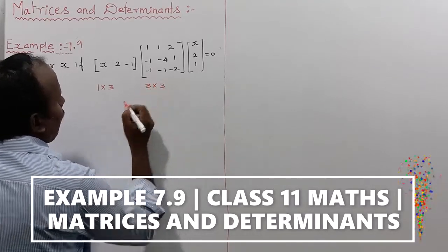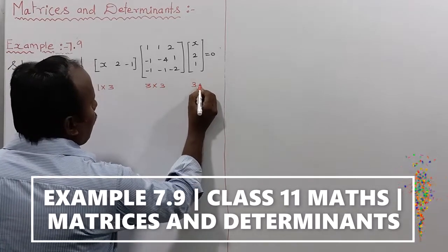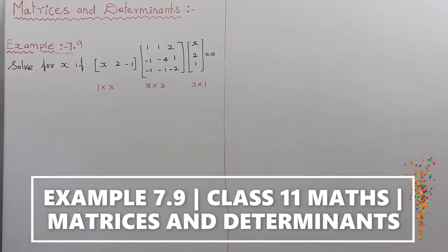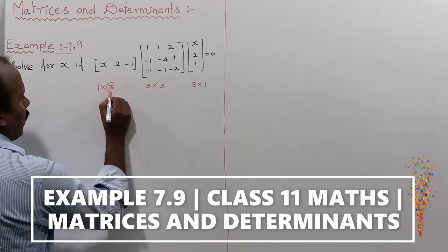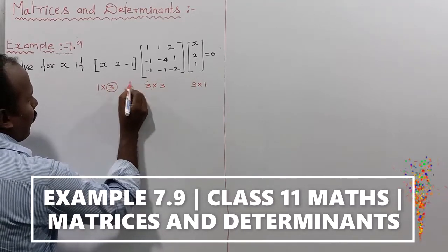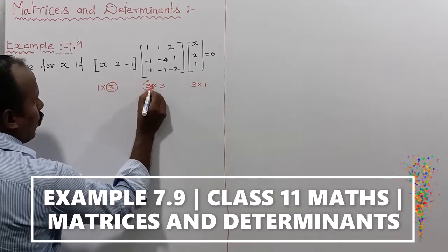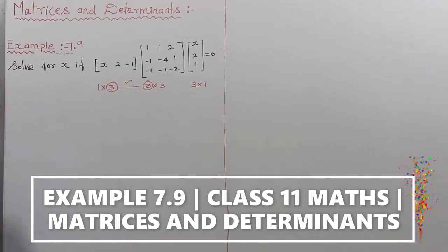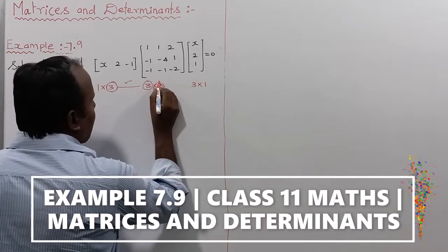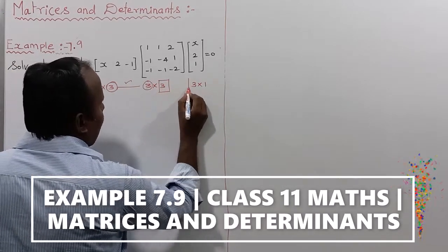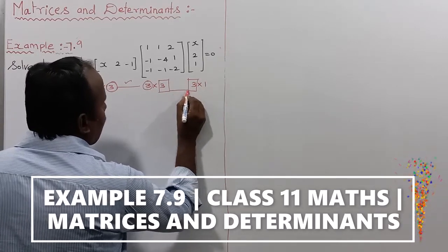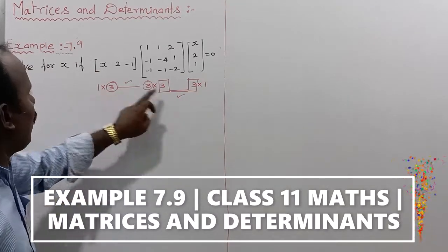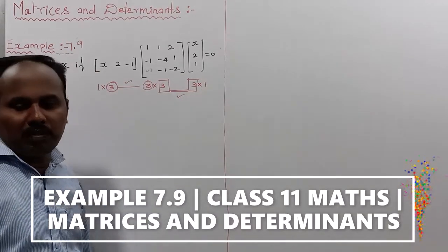The third matrix is 3 rows by 1 column. To check multiplication eligibility: the first matrix columns must equal the second matrix rows — which they do. Similarly, the second matrix columns equal the third matrix rows, so multiplication is eligible. The result will be a 1 by 1 matrix.